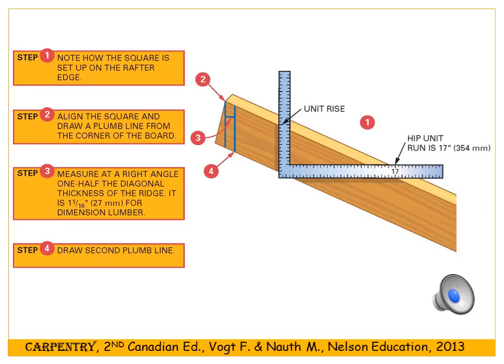With the framing square set at the unit rise and 17, draw your initial ridge plumb cut line. Then shorten — the shortening is at 90 degrees to the plumb cut line — by one and a sixteenth inches. That inch and a sixteenth is not along the top of the rafter but at 90 degrees to the ridge plumb cut line, because our ridge board is inch and a half stock.